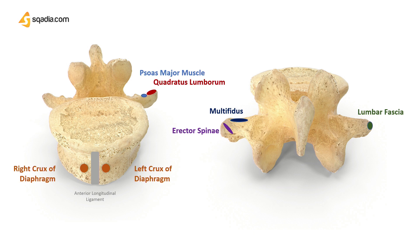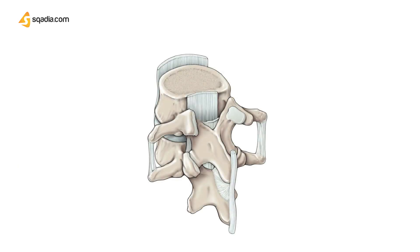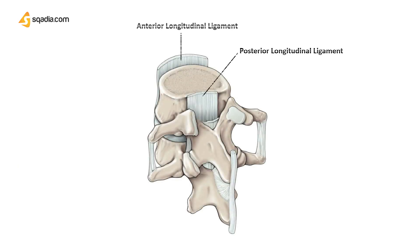The upper and lower borders give attachment to the lateral intertransverse muscles. The upper and lower borders also give attachment to the anterior and posterior longitudinal ligaments in front and behind.